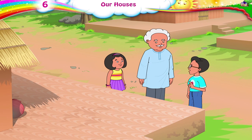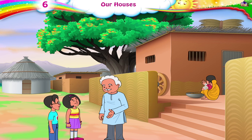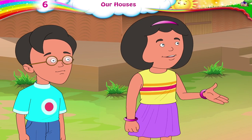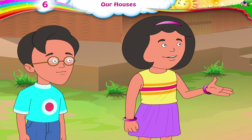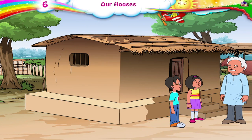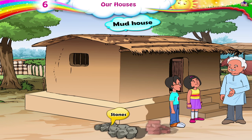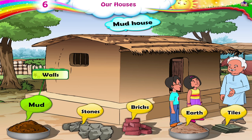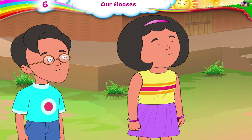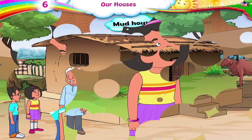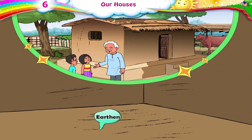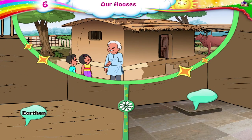Look at the floor — no tiles. It has an earthen floor. Come along, children. I will now show you another house — a mud house. Mud houses are built using stones, bricks, earth, and tiles. The walls are of mud or bricks. The floors of mud houses are either earthen or made of Shahabad tiles.